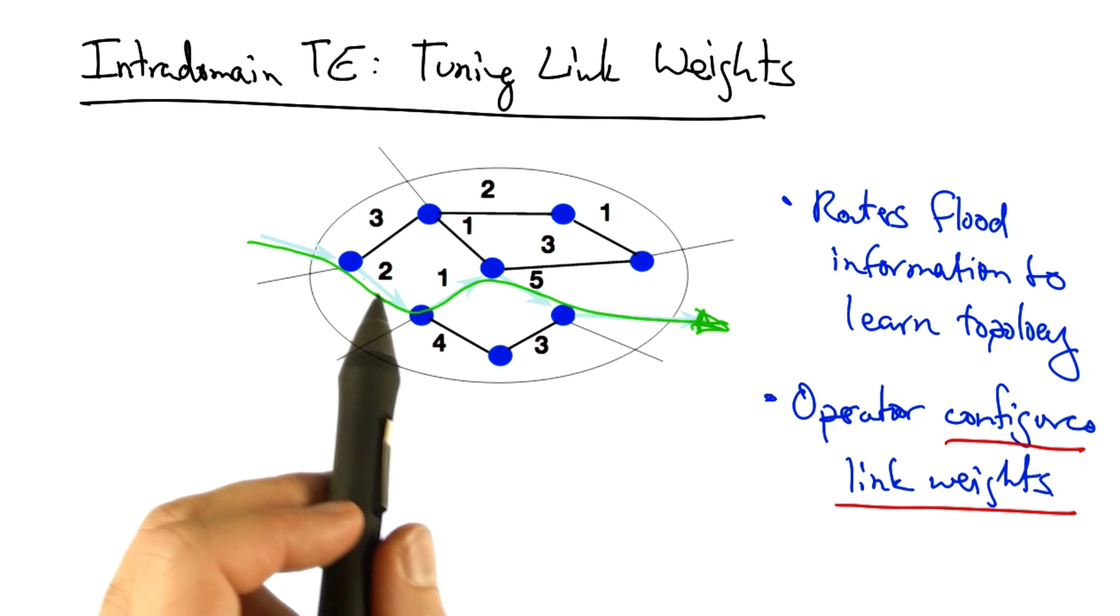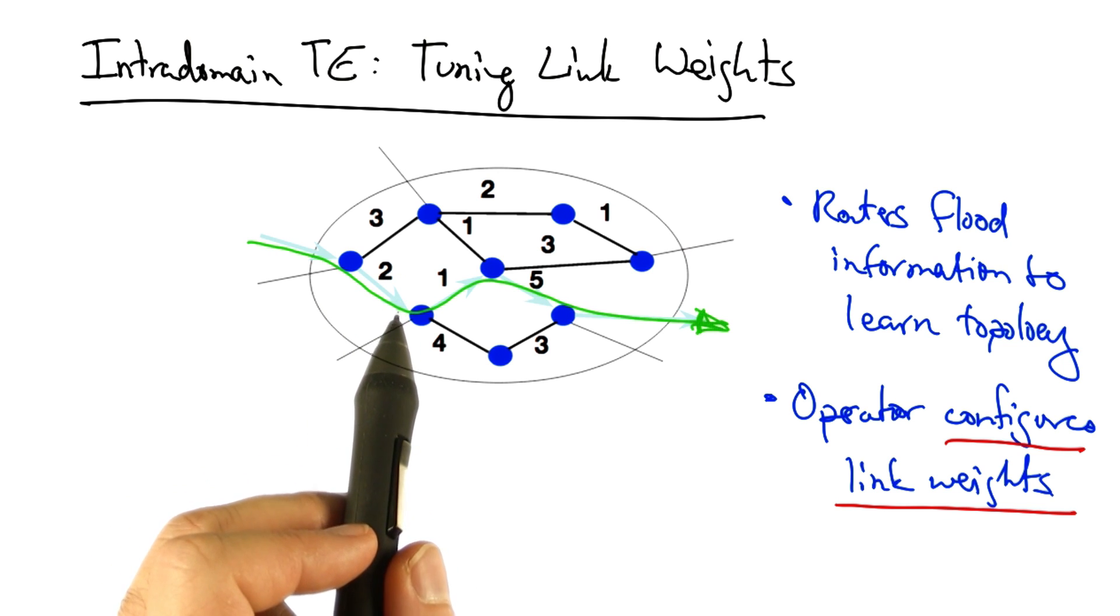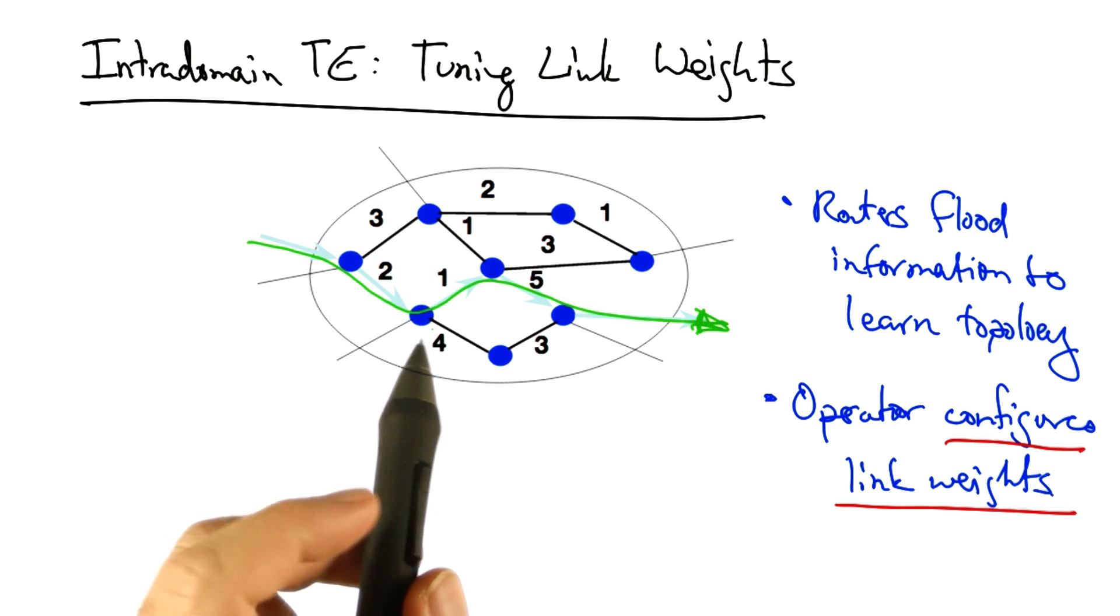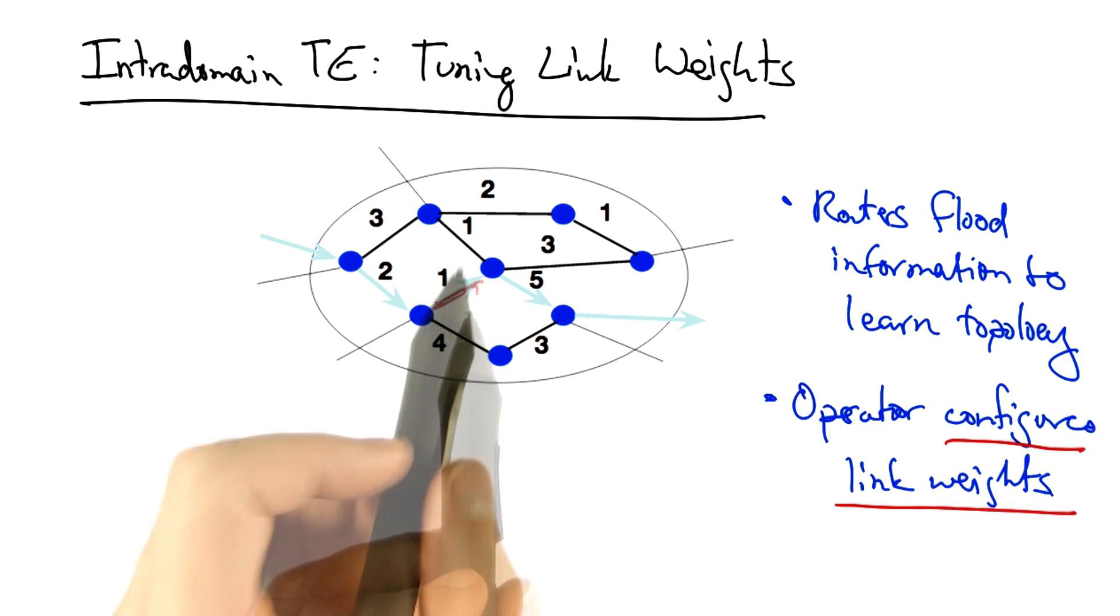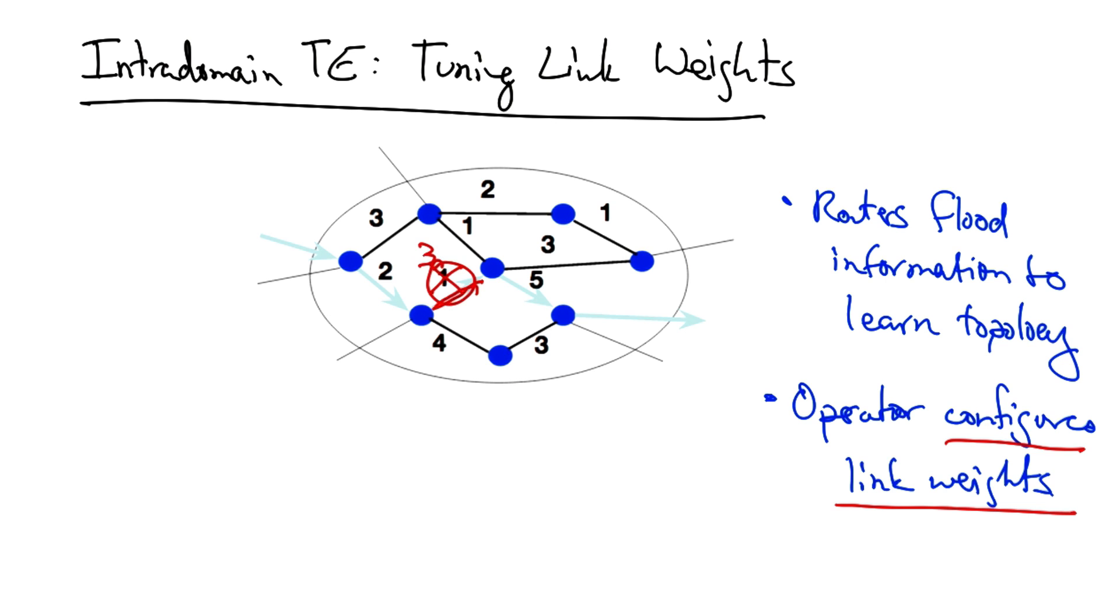In the link weight setting shown here, traffic would flow along the green path. Suppose that the operator would like to shift traffic off of a congested link in the middle of the network, such as this one. By changing the link weight from one to three, the shortest path between this node and this node now takes an alternate route.